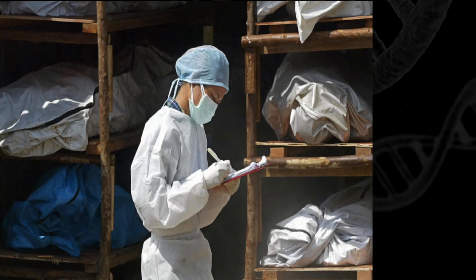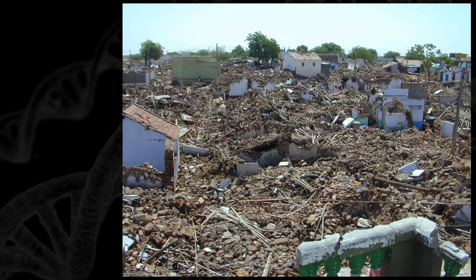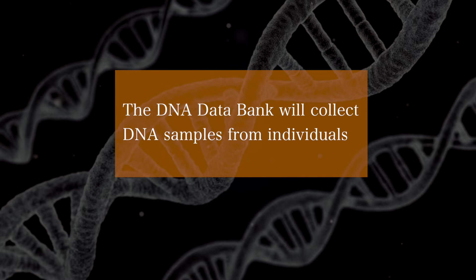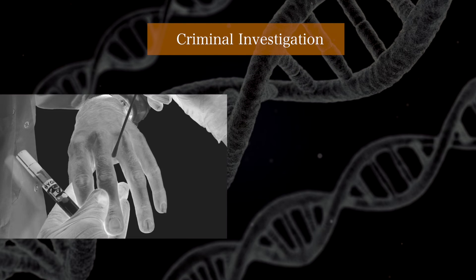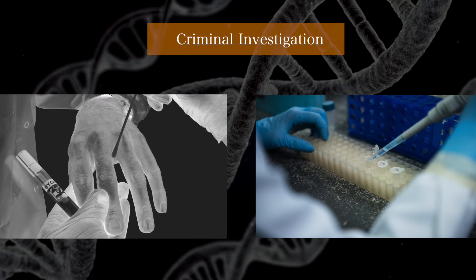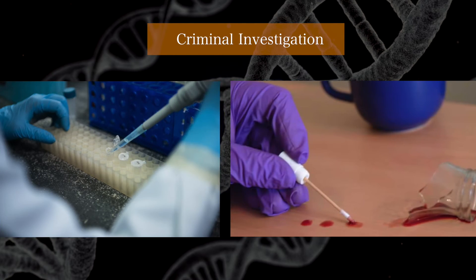Further, there is an index which is used for identification of deceased persons. This might be used in large disasters where people need to be identified. In order to build these databases, DNA samples can be collected from individuals. For example, a police officer can collect a sample from a person who is arrested for a crime. A sample would include a blood sample or a mouth swab.